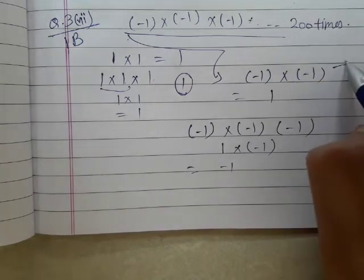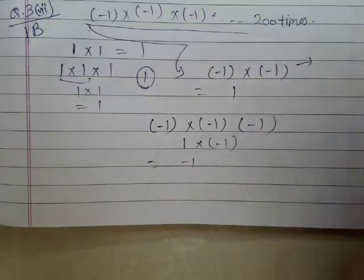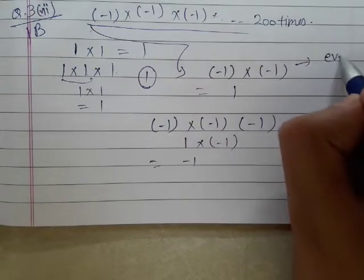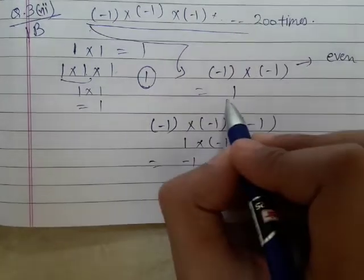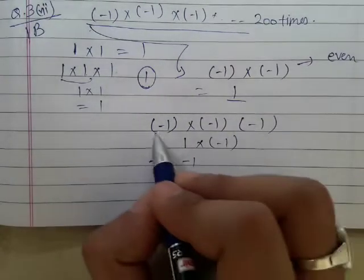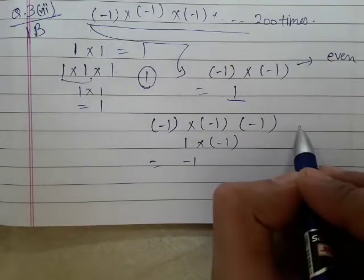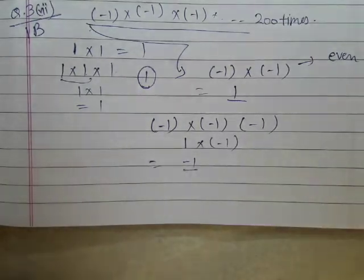So you can see that when I took 2 times minus 1, when I took even times minus 1, I got positive 1. When I took odd times minus 1, I got negative 1.